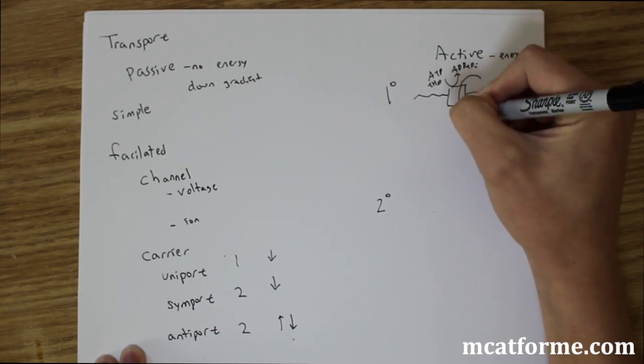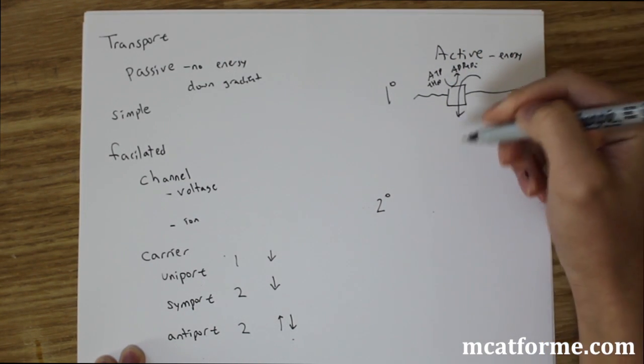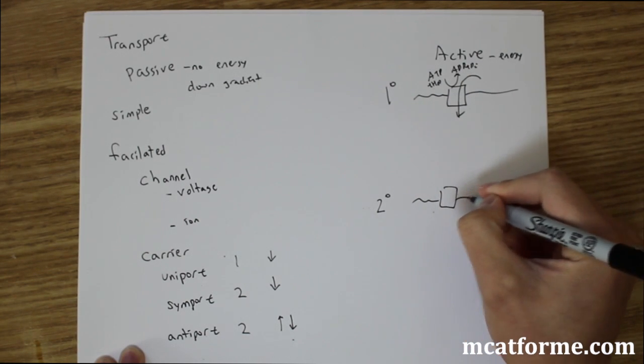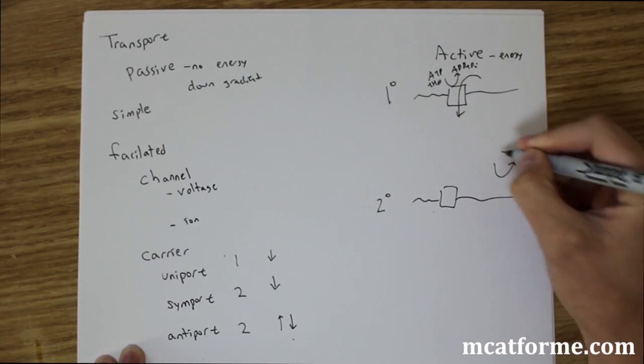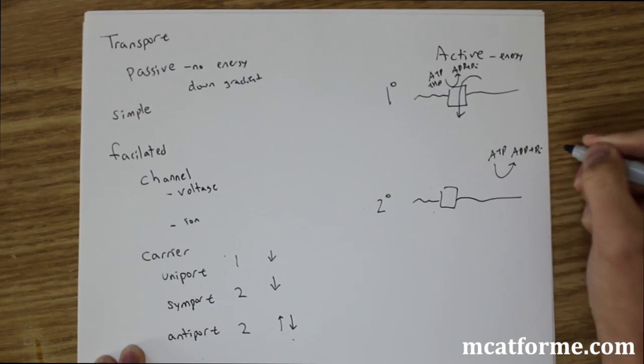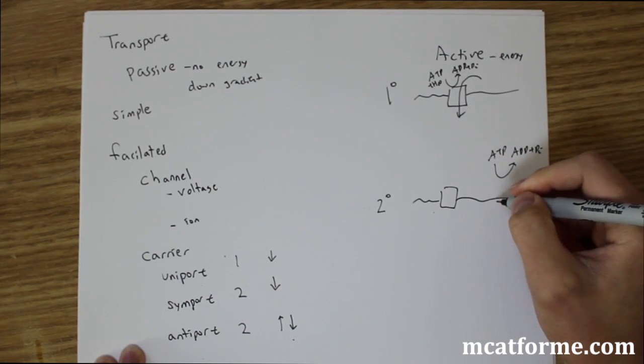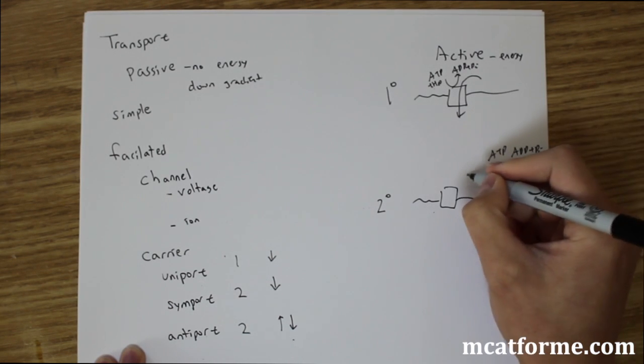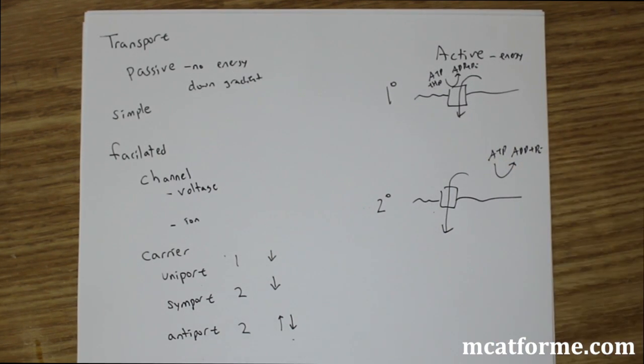Then now this will allow some molecules to flow through. Versus secondary transport, it will use ATP hydrolysis somewhere else. In some type of secondary reaction. And this gradient that was caused now would allow that molecules can pass through this protein.